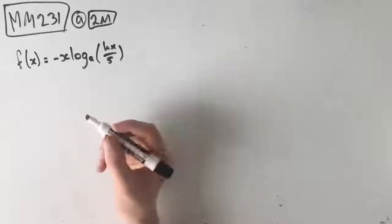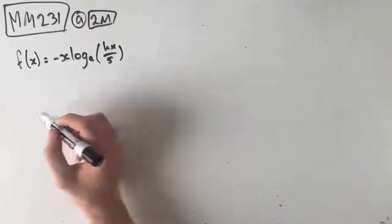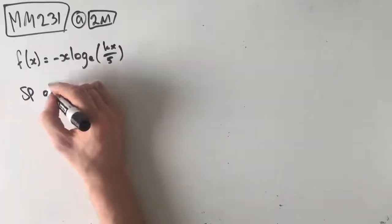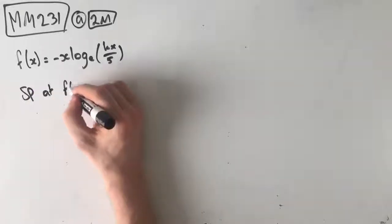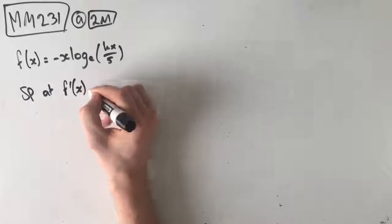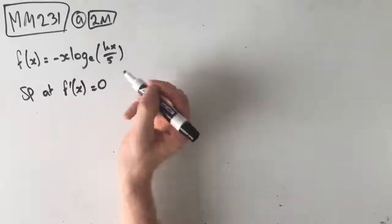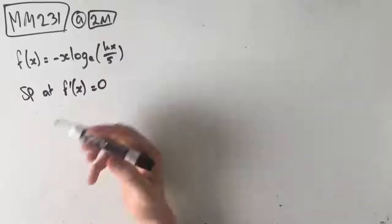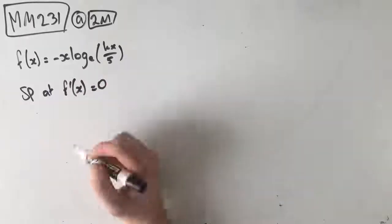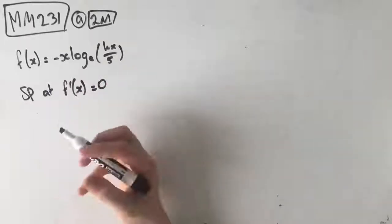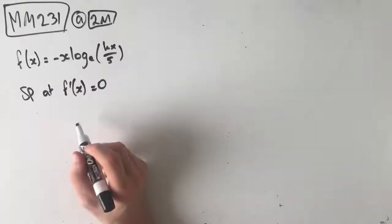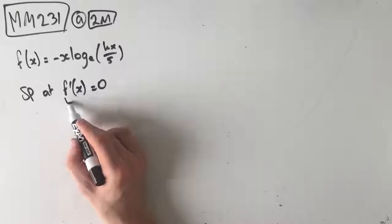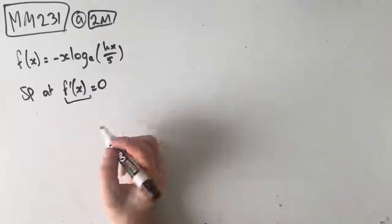First things first, recognize that a stationary point occurs at f'(x) equals 0 — our gradient is equal to 0 at a stationary point. So our first step is to find our gradient function f'(x).